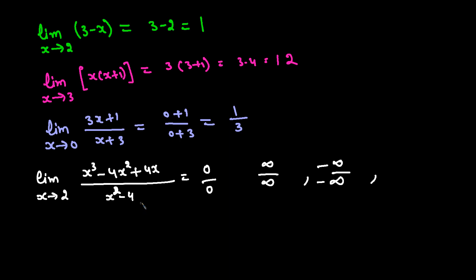When we get 0/0, we need to find the factors of the numerator and denominator, cancel out the common factors, and then substitute the limit value to find the answer.